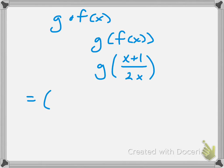So, I'll have, instead of x squared, it's x plus 1 over 2x quantity squared. And instead of x, I have my expression x plus 1 over 2x.